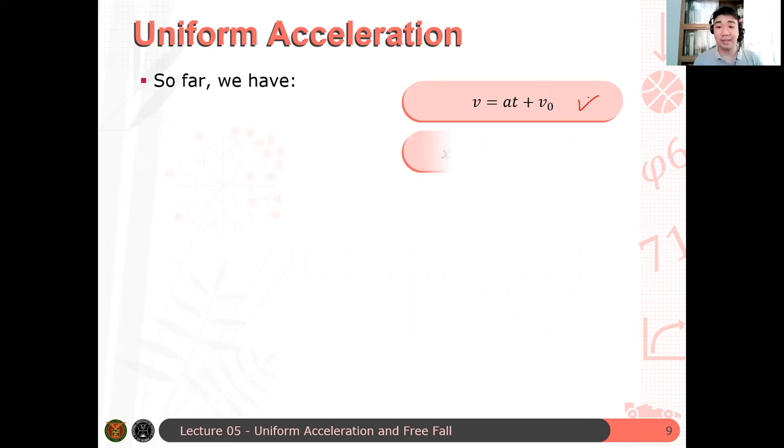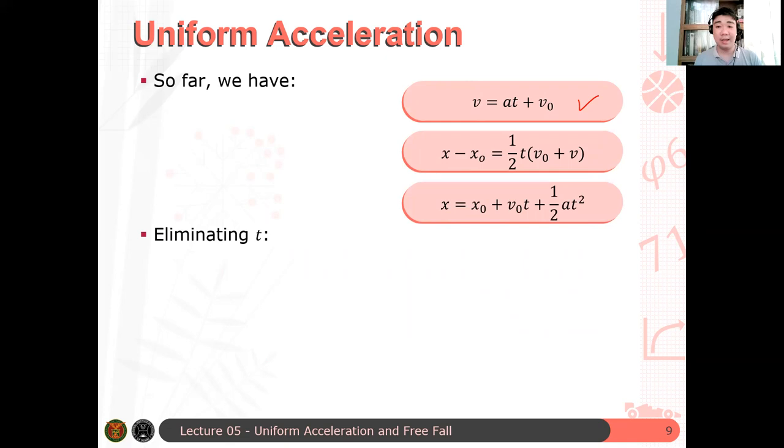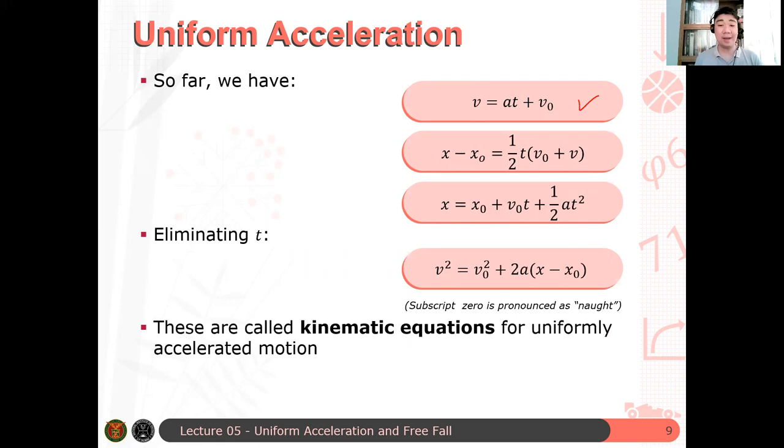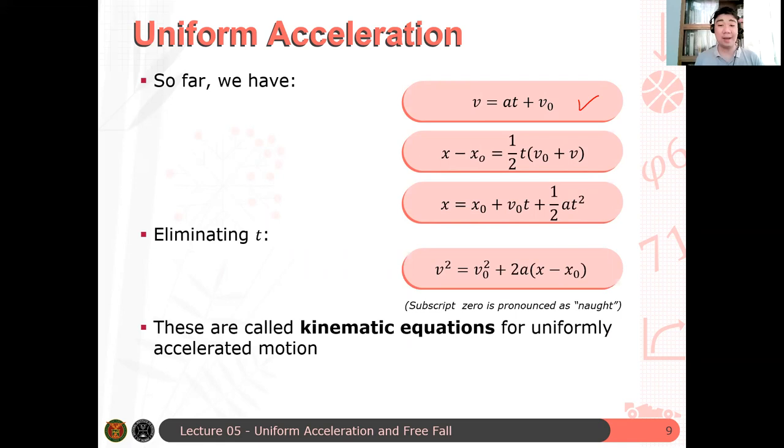So, we already determined the velocity-time function. This is the velocity-time function. And then, we have the definition of the average velocity. And, therefore, your position-time function. Then, we can eliminate the time in the process and say that we get this fourth equation here, which is your velocity-position equation. These four equations are called kinematic equations, or kinematic equations for uniformly accelerated motion. The zero here means naught. So, don't be confused when I say v naught. Naught, N-A-U-G-H-T. Are there any questions here? So, basically, what I just did is to derive one of these four equations. The first one can be obtained from the velocity-time graph. And then, the second one comes from the definition of your average velocity, which is also a property of your VT graph. Are we clear?